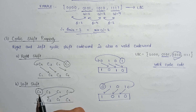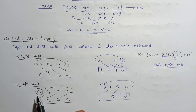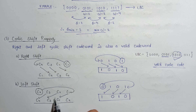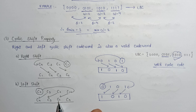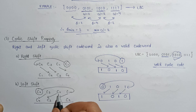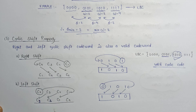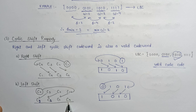Now let's perform the left shifting operation. Given bits c1, c2, c3, c4 — for a left shift, c4 moves to the position of c1, while c1 shifts to c2's position, c2 shifts to c3's position, and c3 shifts to c4's position.